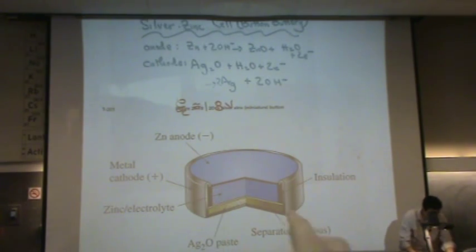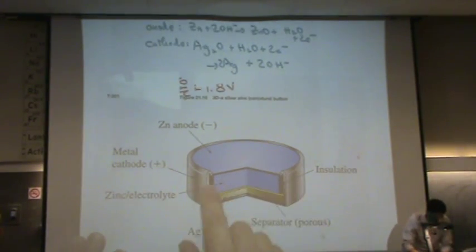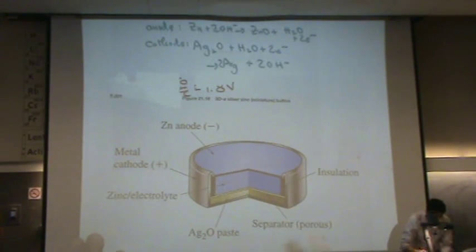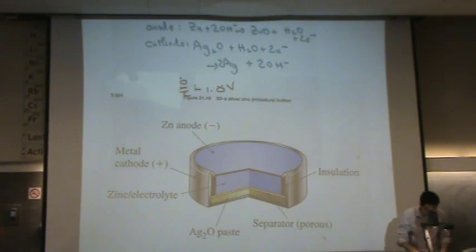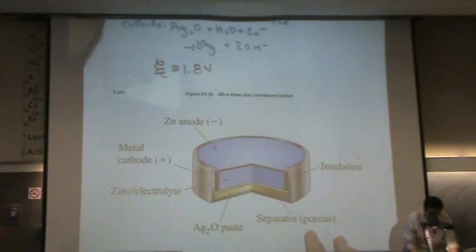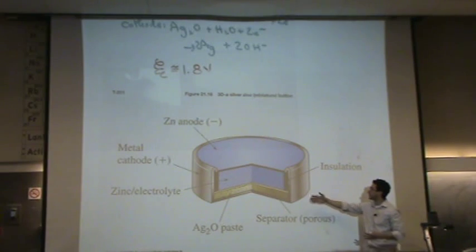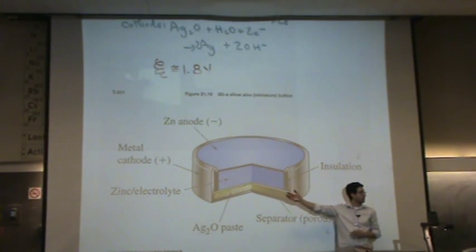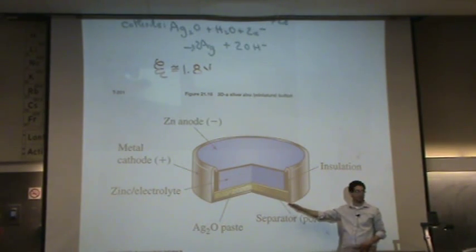So you can see we've got the zinc anode, we've got the electrolyte kind of paste there, because that acts as your salt, and we've got the silver paste at the very bottom. Again, these will go until you've run out of material, so the reaction is done happening, or until the casing falls apart.